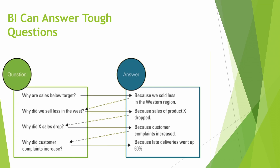Business intelligence can start answering the tough questions. For example: why are sales below target? Because we sold less in the western region. Why? Because sales of Product X dropped. Why? Because customer complaints increased. Why? Because late deliveries went up — in other words, a supply chain problem. So the original question of why sales are below target is answered because late deliveries went up on a particular product. The ability to drill into data and answer questions like this is the domain of business intelligence, and you can't get there unless you have all your data in one place — which leads you to a data warehouse.